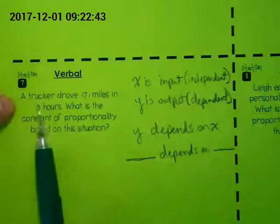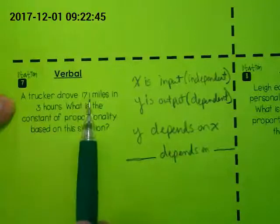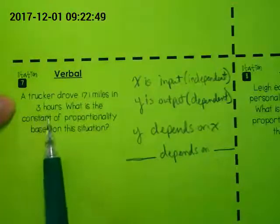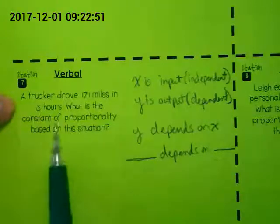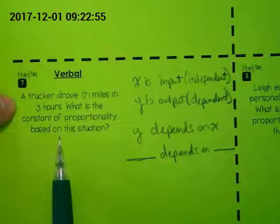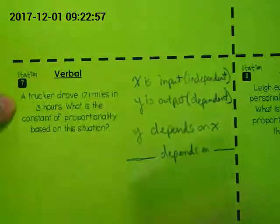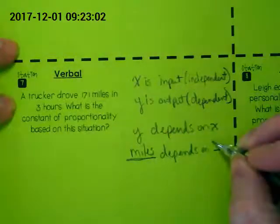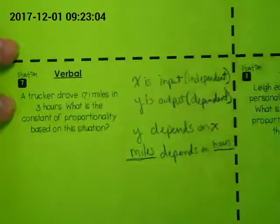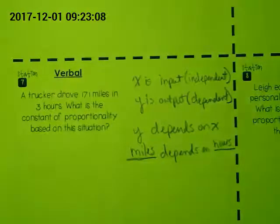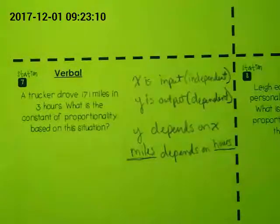Let's look at the problem again. A trucker drove 171 miles in three hours. What here depends on what? The miles he drives depends on the hours. If he drives zero hours, he's going to be driving zero miles.